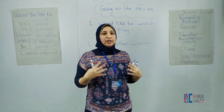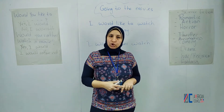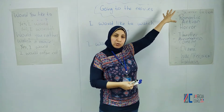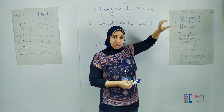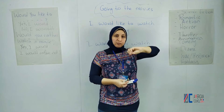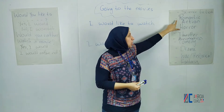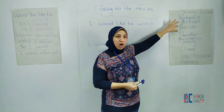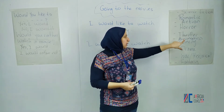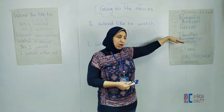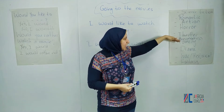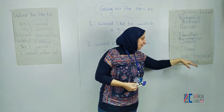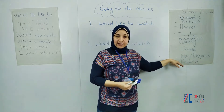So what are the different types of movies that we can watch? We can watch science fiction movies, and these are also called genres. So a genre is a type of movie — like science fiction, romantic, action movies, horror, thriller, animation, comedy, drama, war or historical movies, and fantasy movies.